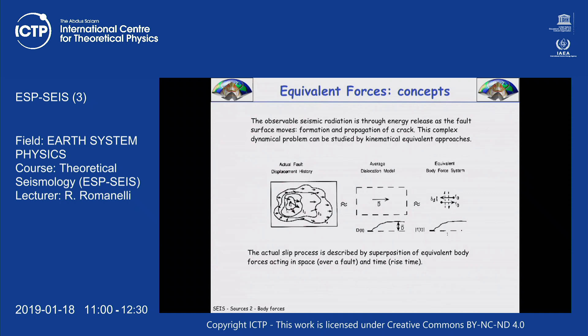The double couple is not an earthquake, of course. But it's the best equivalent body force system that can represent an earthquake when you consider it as a point. That's the representation theorem — it's not an earthquake, but it is an earthquake. What we gain is that we can insert a double couple and solve the equation. It will not be easy, but we can do it. If we don't represent it this way, we cannot do any analytical trick.